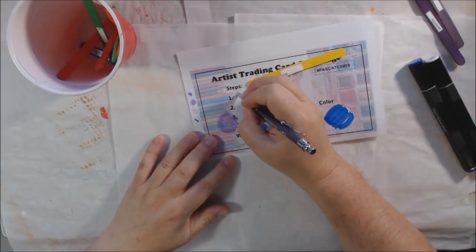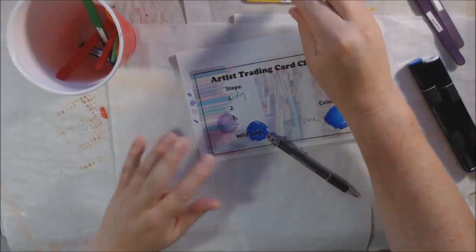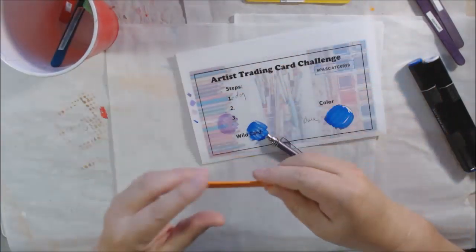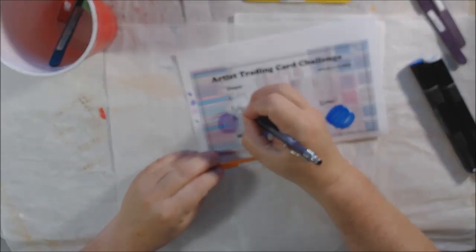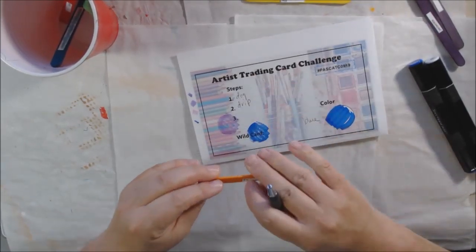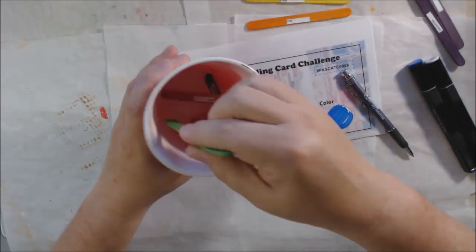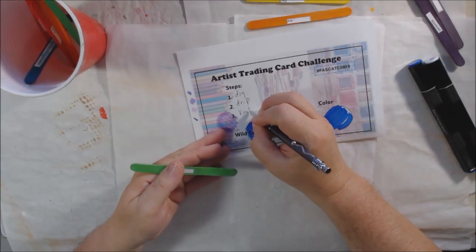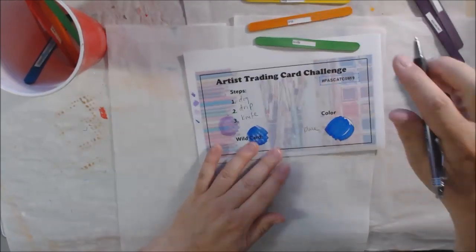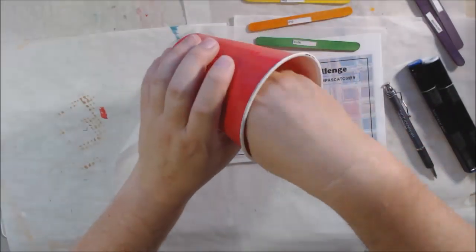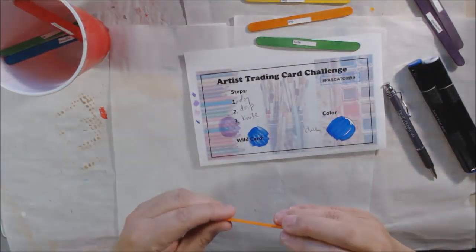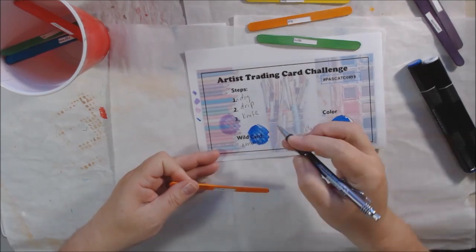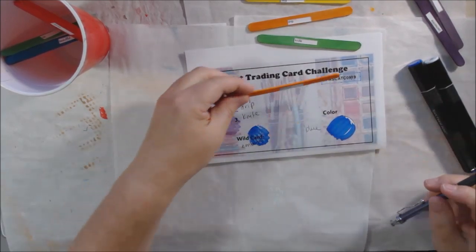Alright, let's go with dog. Dog, drip. Knife, knife really wants to come up. What does that mean, people? What does it mean? And the wild card is emboss, so you can use emboss instead of one of these if you want to. So that's it for the challenge.